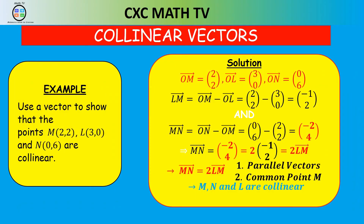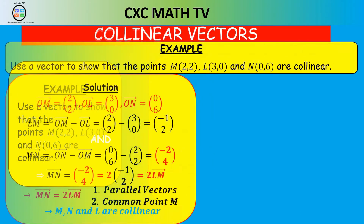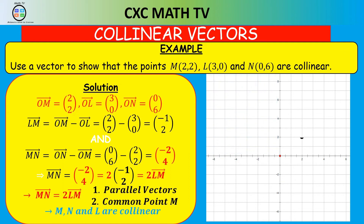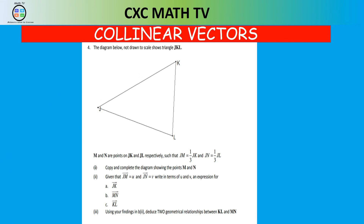Since MN = 2 × LM, these two vectors are parallel. And point M is common to both vectors. Therefore M, N and L are collinear — they lie on a straight line. Plotting points M(2,2), L(3,0) and N(0,6) on a graph and drawing a straight line through them confirms that all three points are indeed collinear.